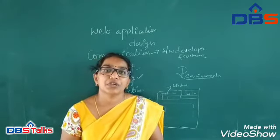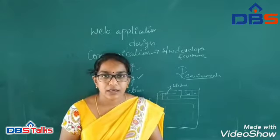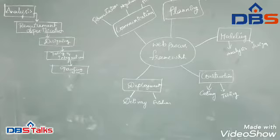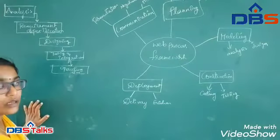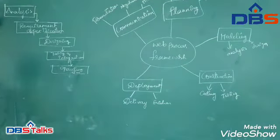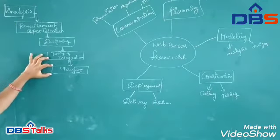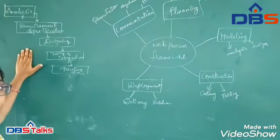If it is a web-based application, what are the things we are going to do? In the normal software development process, first we do analysis, then requirement specification, then designing, then testing and integration, then operating — these are the steps in the normal software development process.